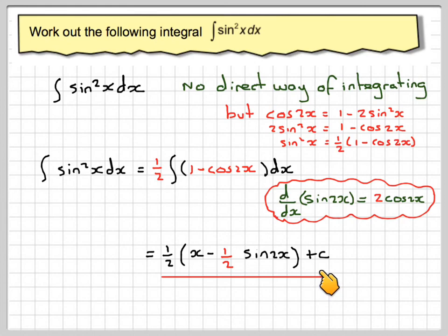Close the bracket, plus c as the final answer. A similar process can be done for integrating cos squared x, where you use a different version of this formula.